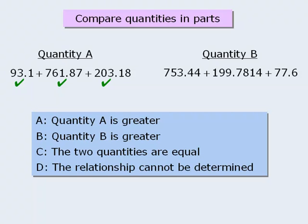So all three numbers in quantity A's sum are greater than all three numbers in quantity B's sum. As such, quantity A must be greater than quantity B, which means the correct answer here is A.